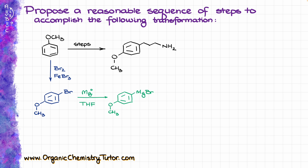Next, we are going to convert our bromide into the corresponding Grignard reagent. Typically, that reaction is done with magnesium shavings in THF or other ether-like solvents to stabilize the intermediate.